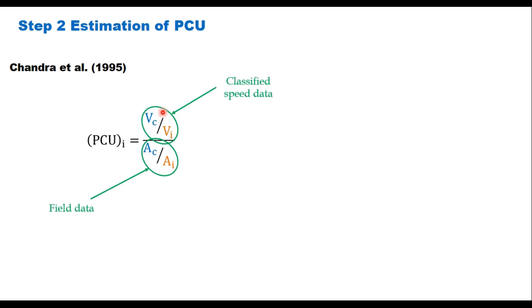And this AC upon AI is the projected rectangular area of car and vehicle category I, which is measured in field.